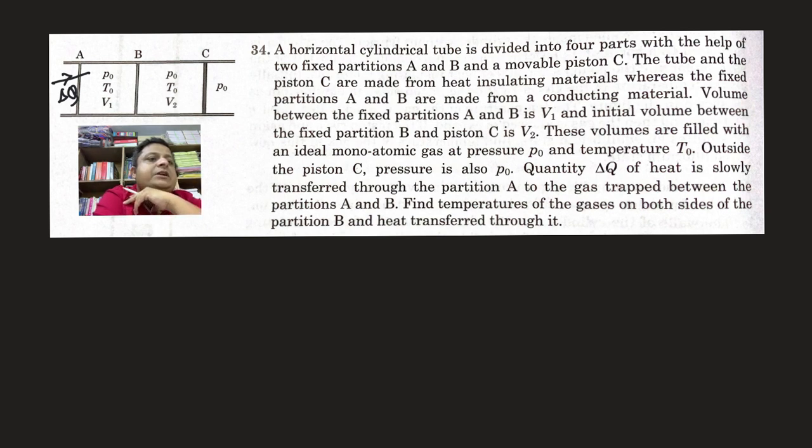The gas trapped between partitions A and B - we need to find the temperature of the gases on both sides of partition B and the heat transferred through it. Suppose the heat transferred here is small q. So the heat available to this left chamber is actually delta Q minus small q. Because the total heat supplied is delta Q, one part goes here as small q. So heat absorbed by this part between A and B is delta Q minus small q.